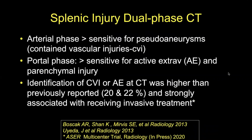The majority of centers nowadays evaluate patients with blunt vascular injuries using dual-phase CT. The arterial phase is more sensitive for the evaluation of contained vascular injuries such as pseudoaneurysm, and the portal phase is more sensitive for active bleeding and the evaluation of parenchymal injury. A recent report has shown that vascular injuries seen at CT have a higher than previously reported incidence, around 20%, and they are strongly associated with invasive treatment.